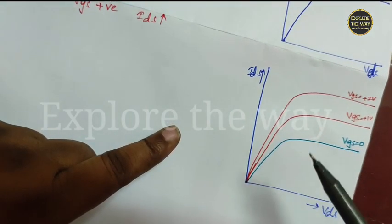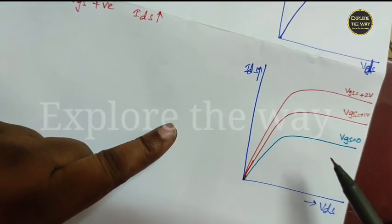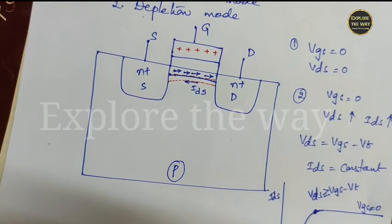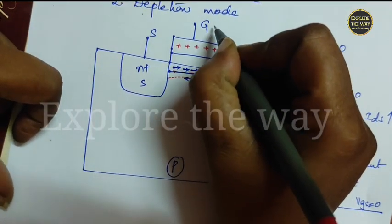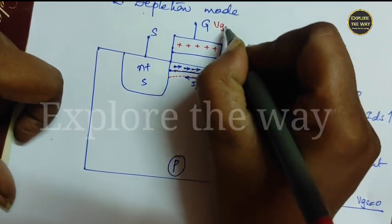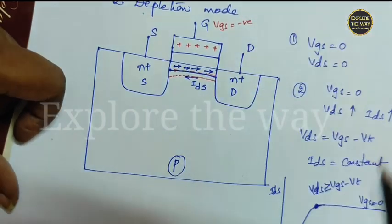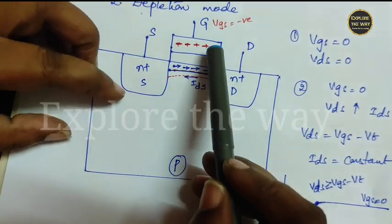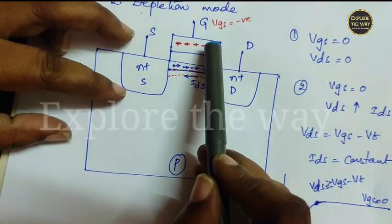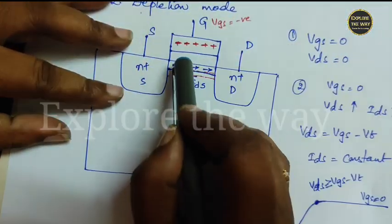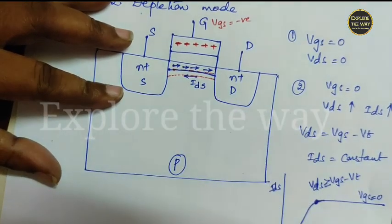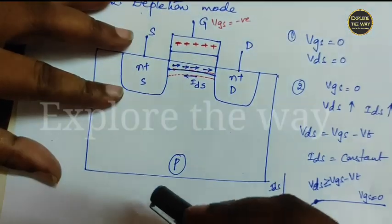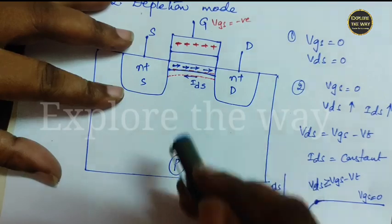In this case, the operation is same as enhancement mode transistor. Here, we need to discuss in the other way. That is, if you make VGS negative, VGS equal to negative. Here, one thing happened. As this plate is negative, it repels the negative carriers in the channel region. And at the same time, it attracts majority carriers from the P substrate.